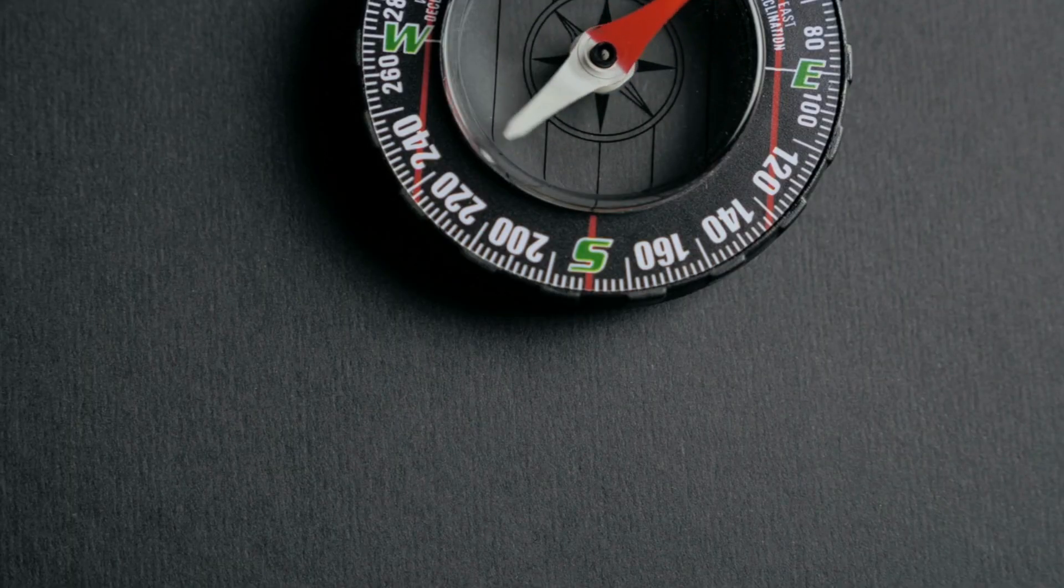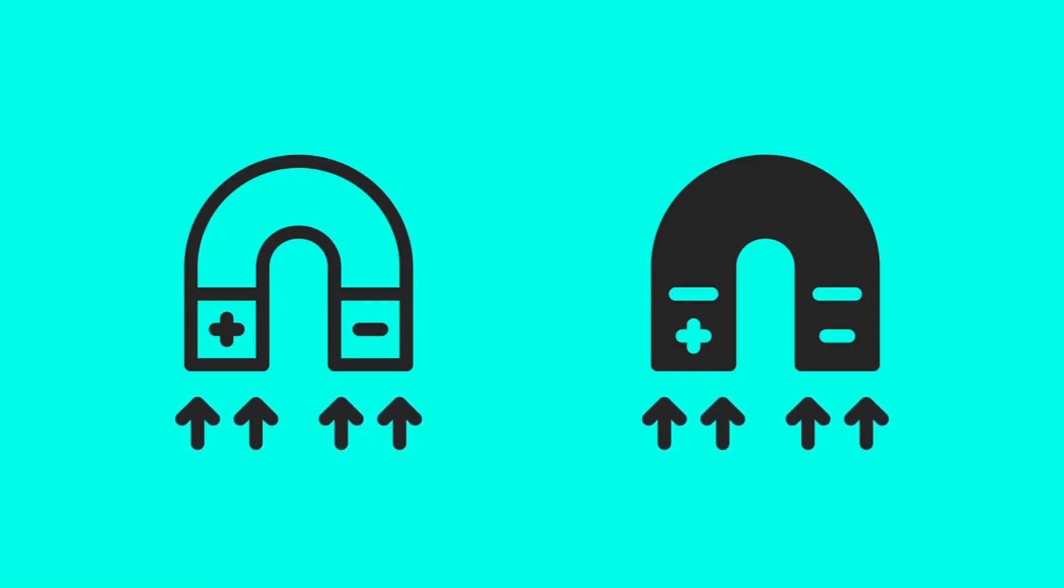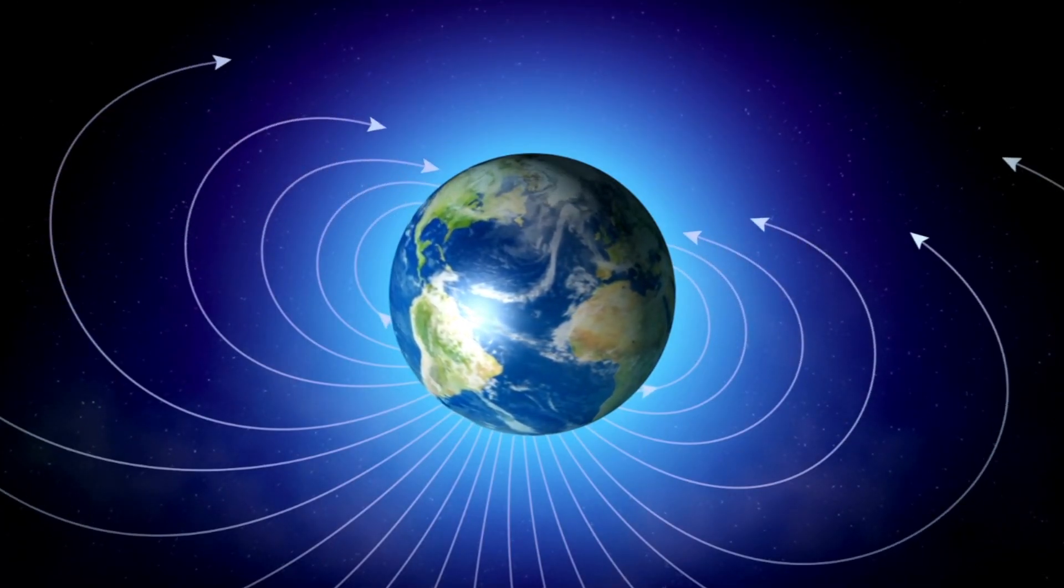So, how does magnetism work? Magnets have two ends to them. These are called poles, a north pole and a south pole, just the same as on Earth.